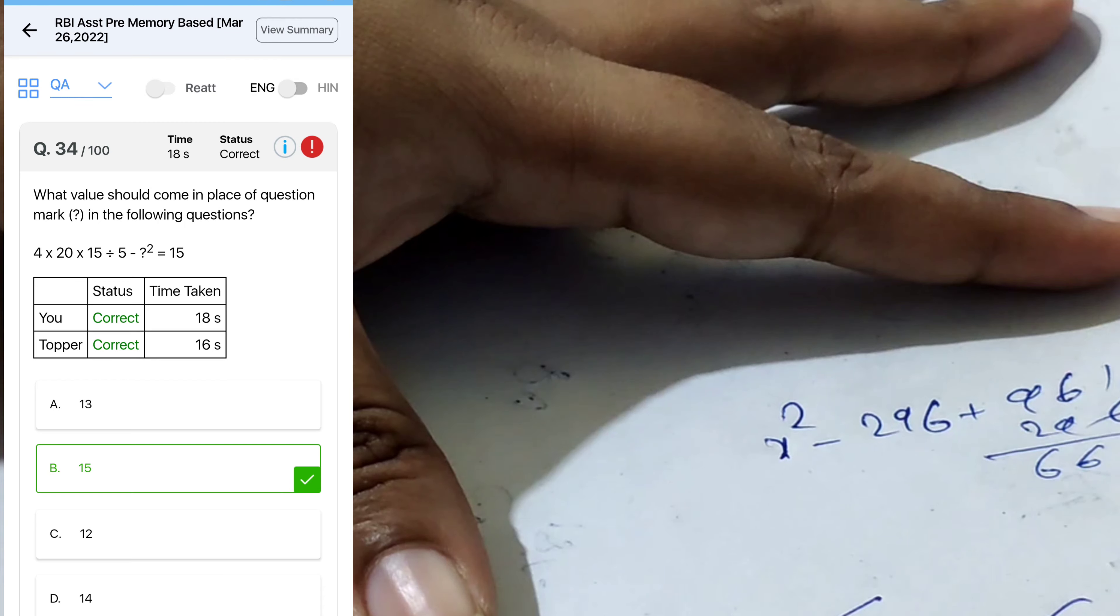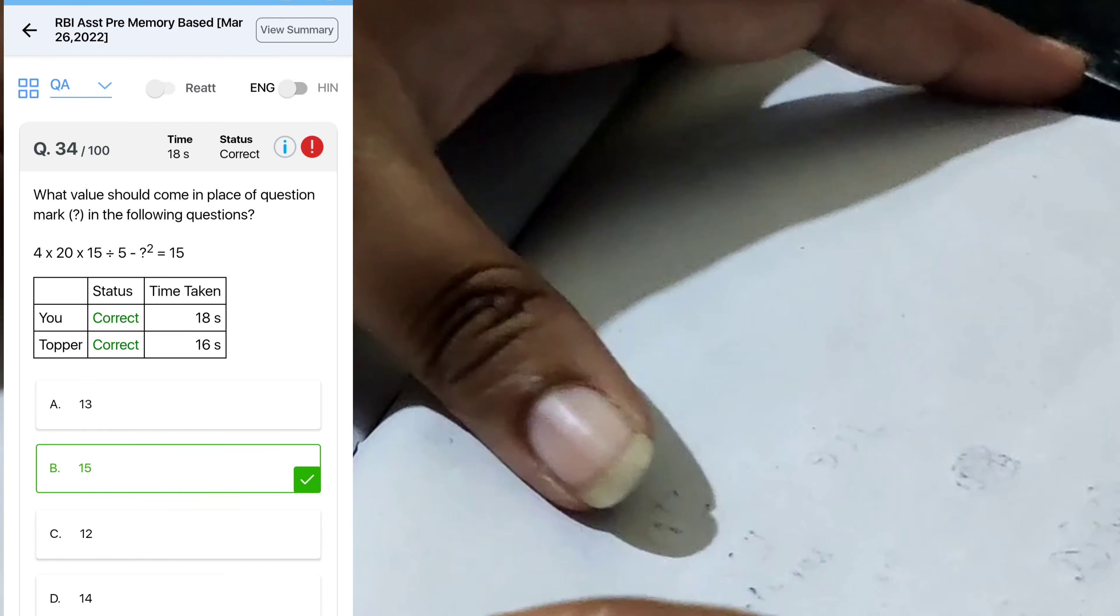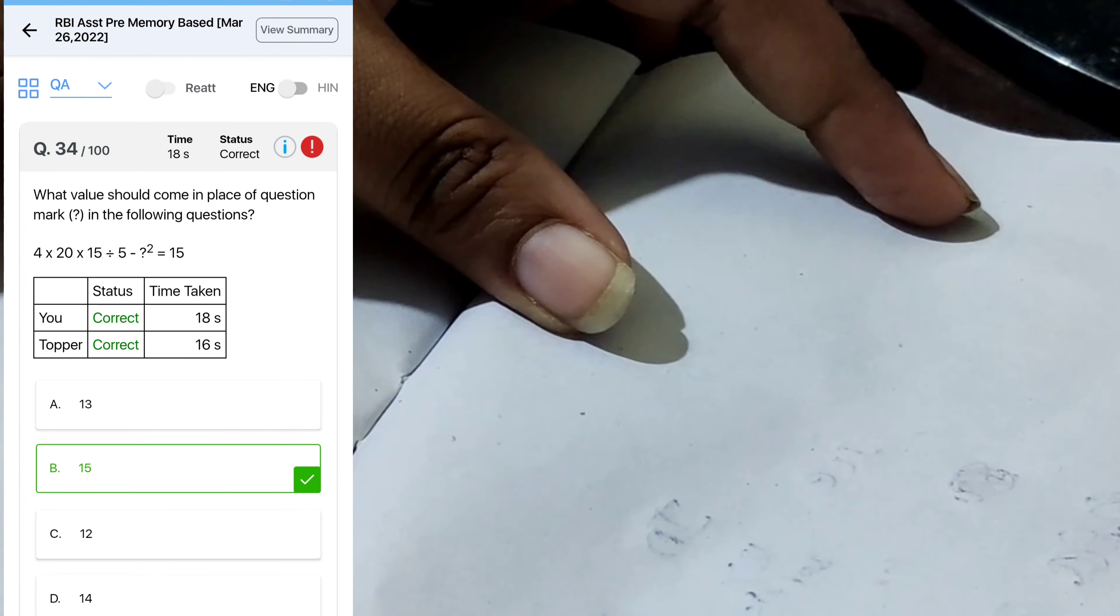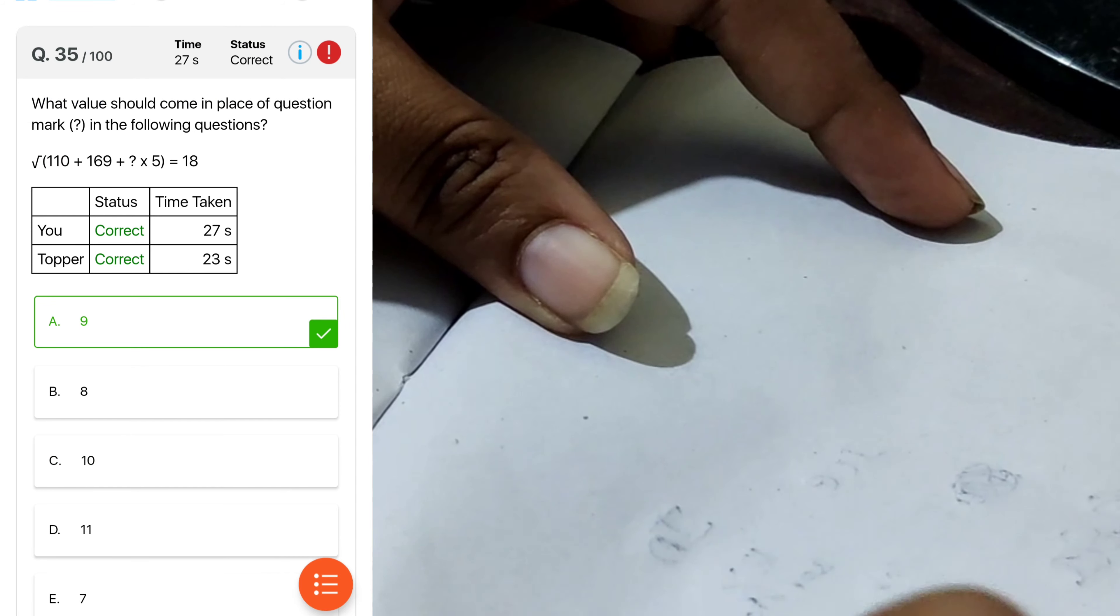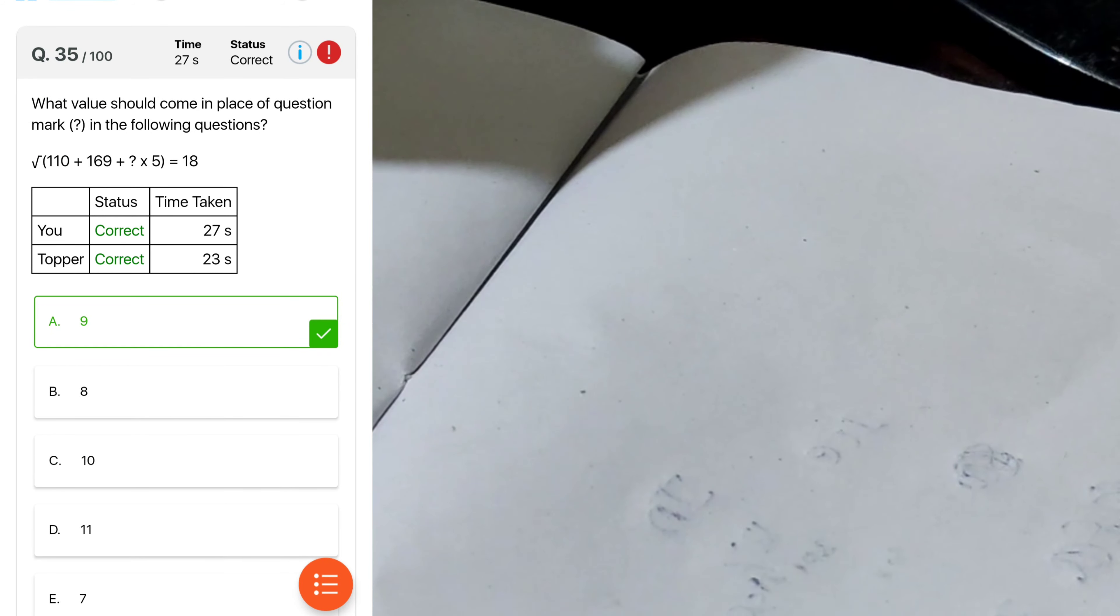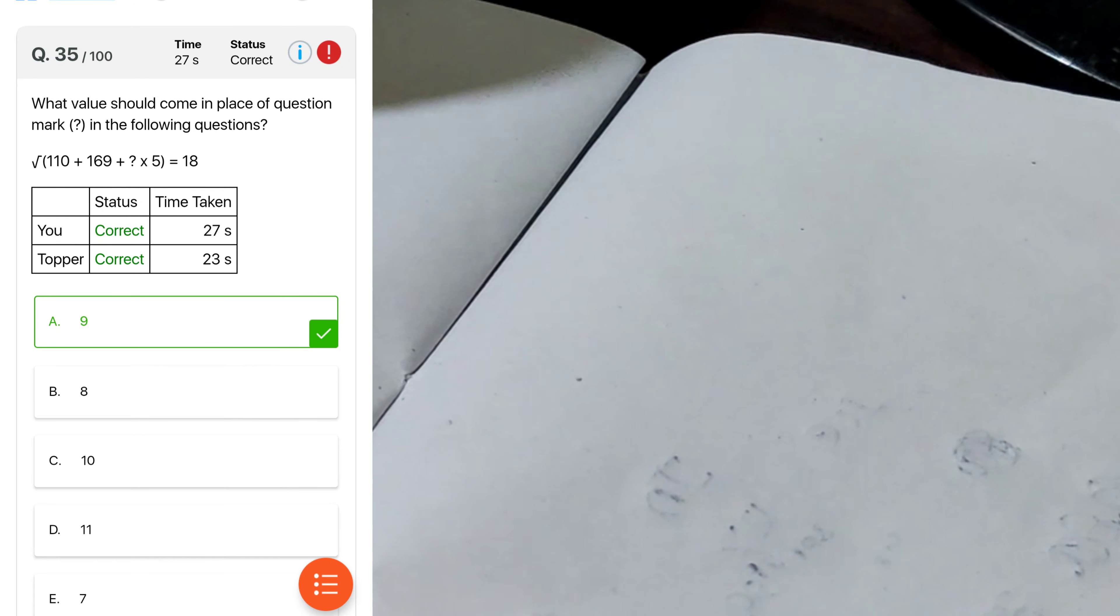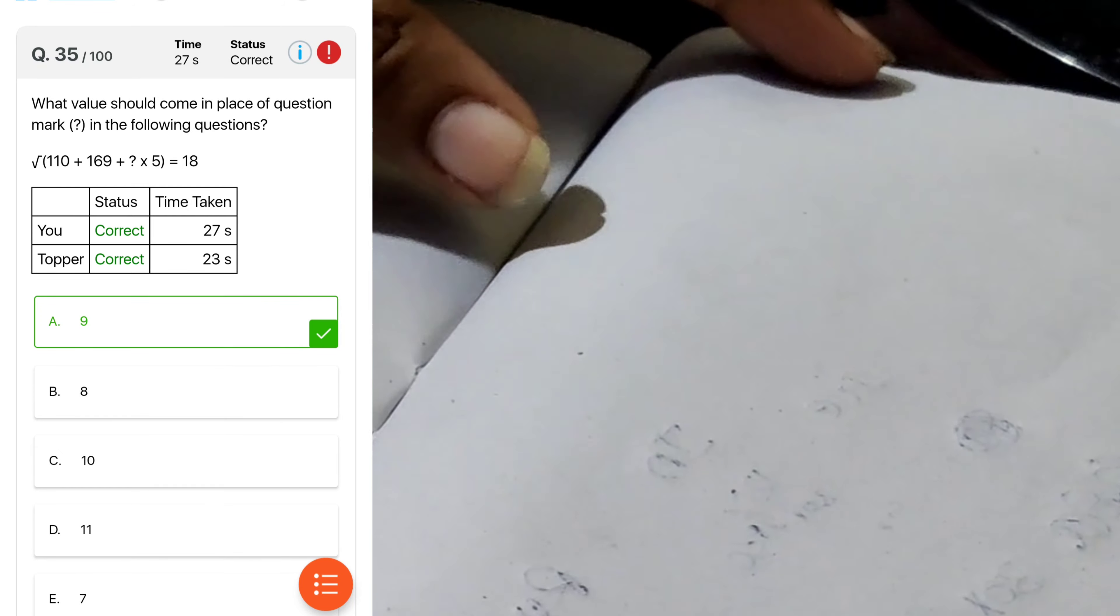Option B. Next, 110, 169 is 279 plus 5x. This is square root, so we will cancel 18 square root. 18 square, 324, 324 minus 279 is 54.